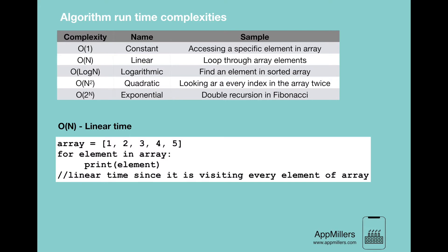The next time complexity is linear time complexity, written as O(n). Here time complexity will grow in direct proportion to the size of the input data. The best practice is to try to keep our functions running below or within this range. A good example of linear time complexity is looping through array elements — the lookup time is directly related to the size of the input array. If the size of the array increases, the loop time increases proportionally.